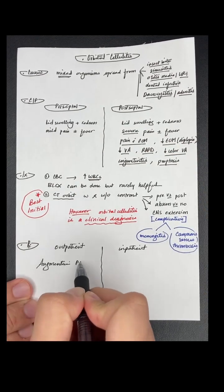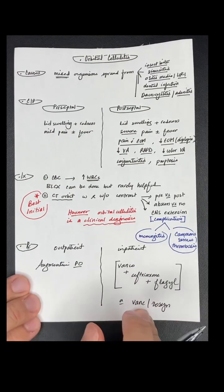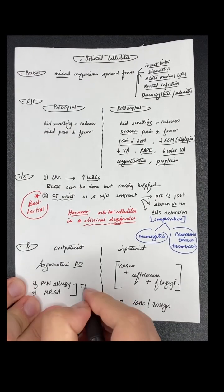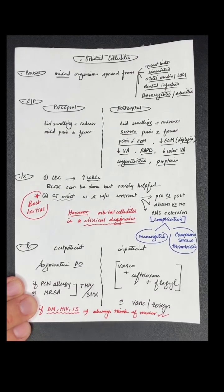If it's preseptal, use outpatient treatment with oral augmentin. If it's postseptal, admit the patient and give the same treatment as brain abscess: vancomycin, ceftriaxone, and flagyl.